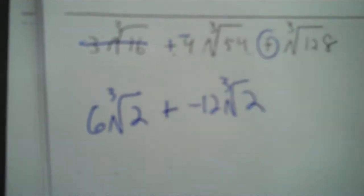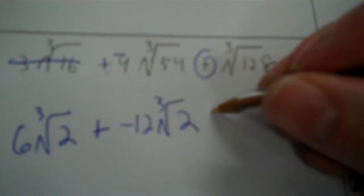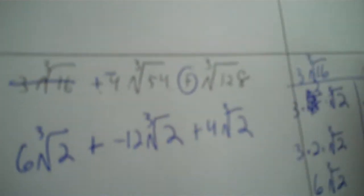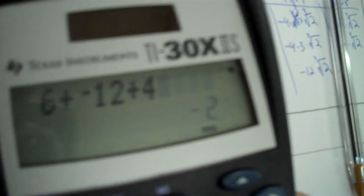So far we're looking good. Now the last one — no coefficient, so you just make your two radical 3s right away. And 128: start at 125, then 64 — so 64 and 2. The cube root of 64 turns into 4. So you've got 4 times the cubed root of 2. Now all the radicals have the exact same inside. So I take 6 plus negative 12 plus 4. The answer is negative 2.